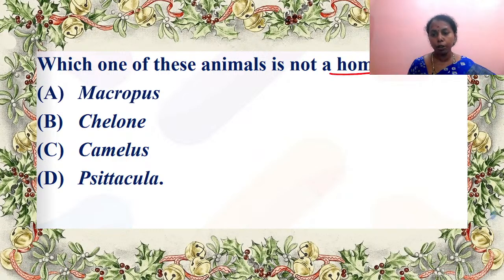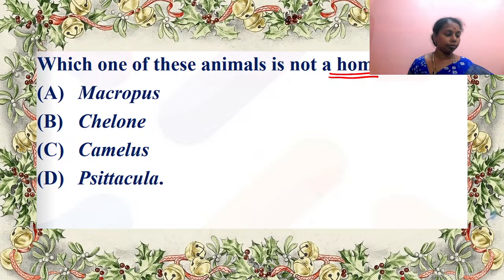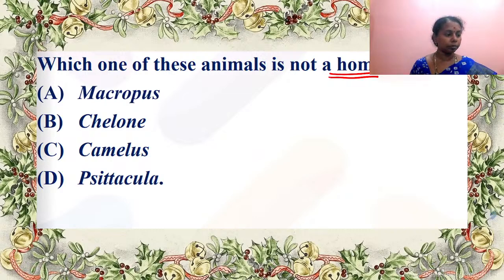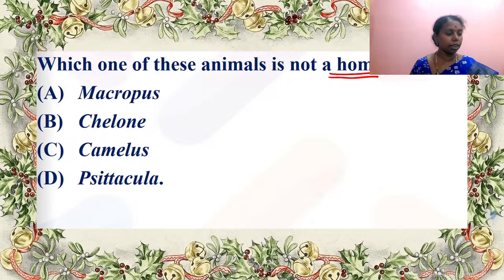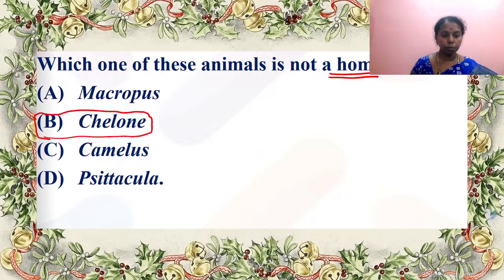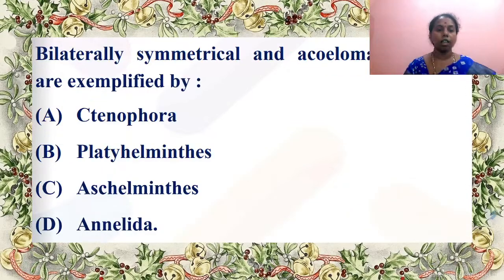Which one of these animals is not a homeotherm — they cannot maintain constant body temperature? Is it Macrobus, Chelone, Chameleon, or Psittacula? Chelone is belonging to reptiles, so it is poikilotherm — it is not a homeotherm. Answer is B — very correct answer children.